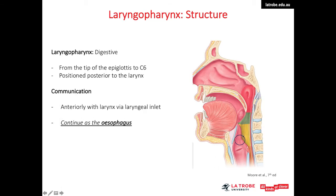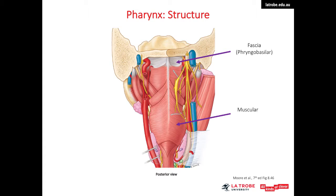The laryngopharynx is located posterior to the larynx and communicates with the larynx via the laryngeal inlet. It continues as the esophagus and is the most inferior part of the pharynx, becoming the esophagus at the level of the sixth cervical vertebra. In this posterior view, the pharynx extends from the base of the skull down to C6. The fascia is named the pharyngobasilar fascia and supports the pharyngeal structure, while the musculature moves food and fluid down to the esophagus.